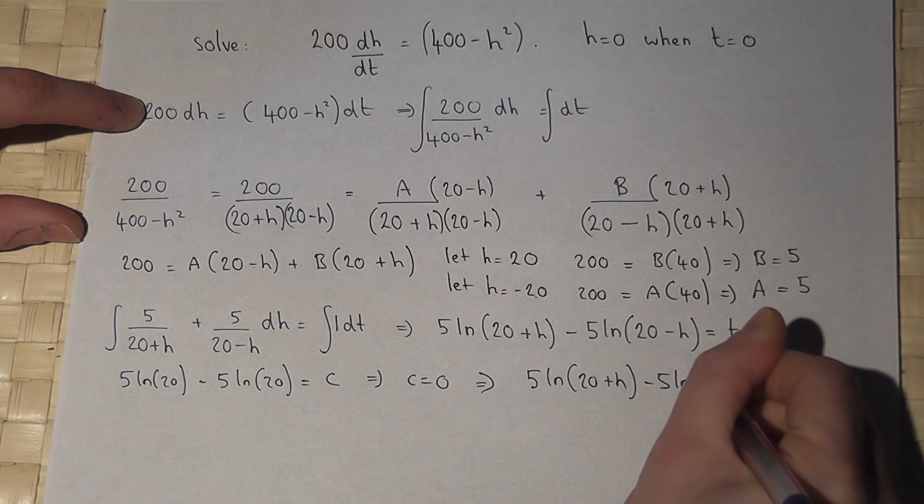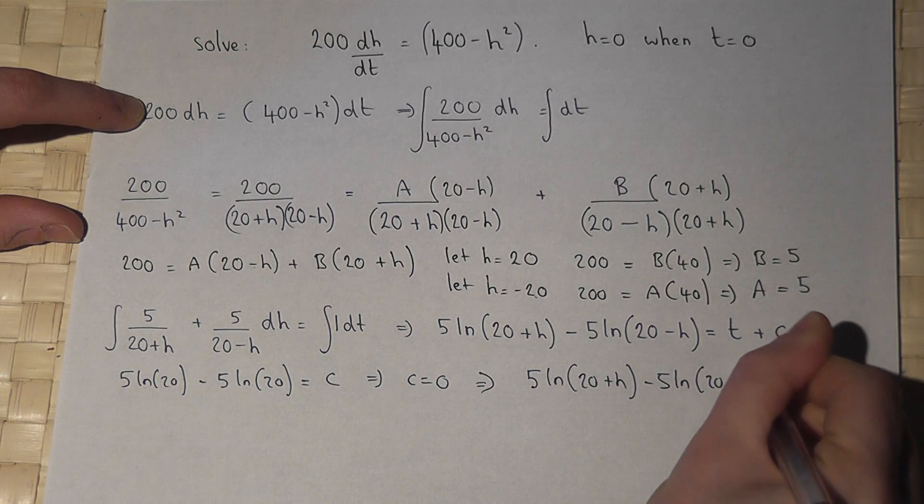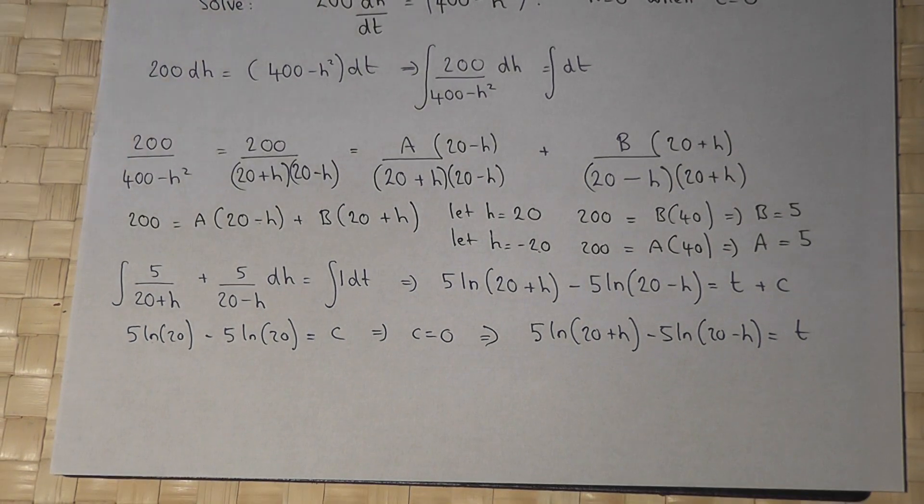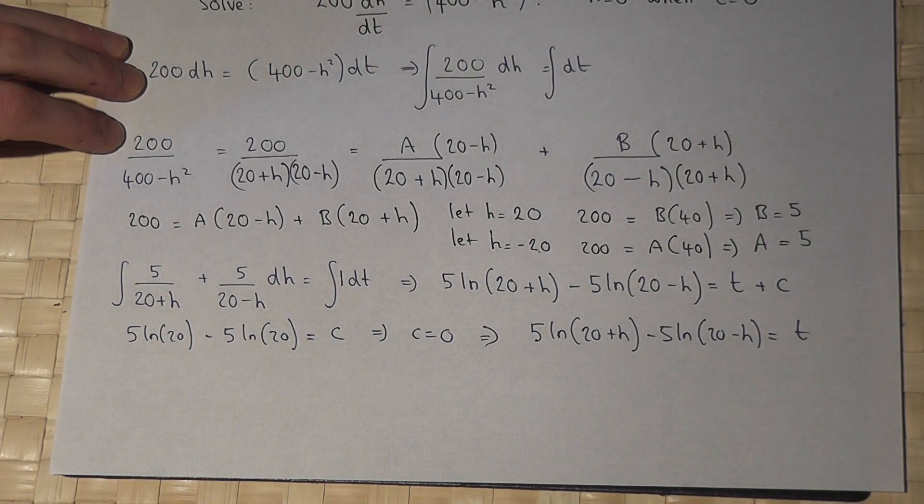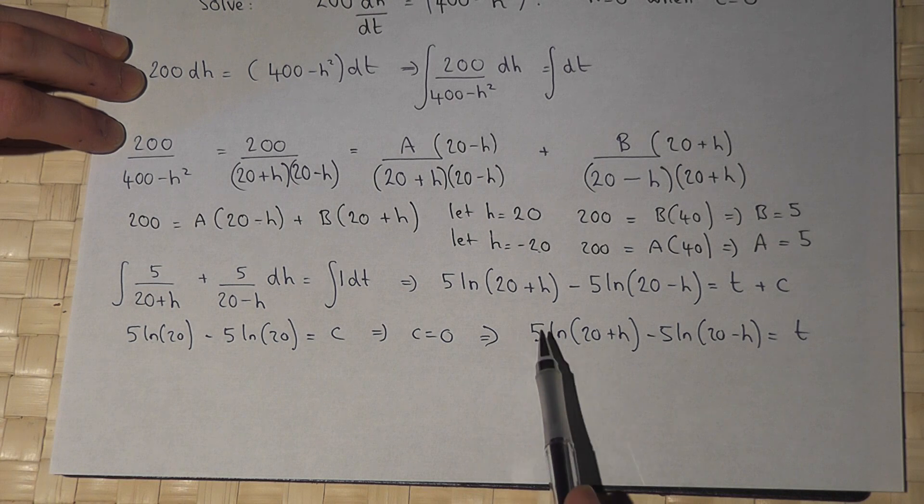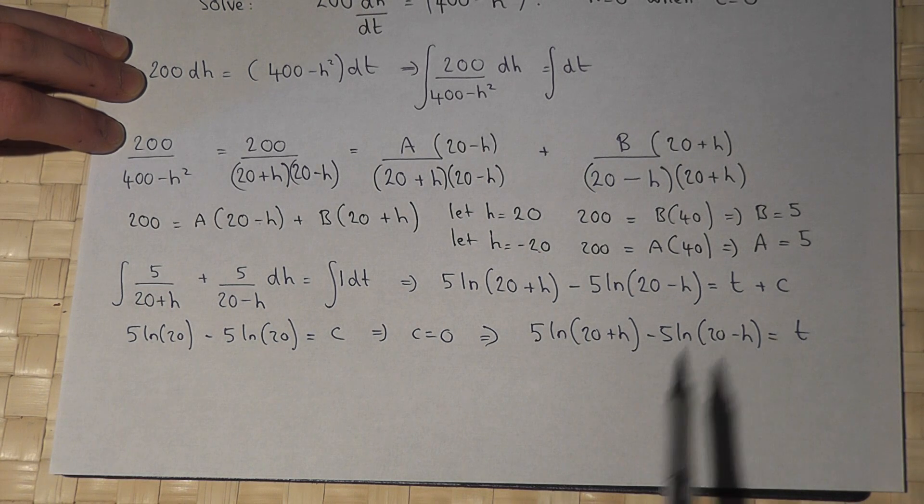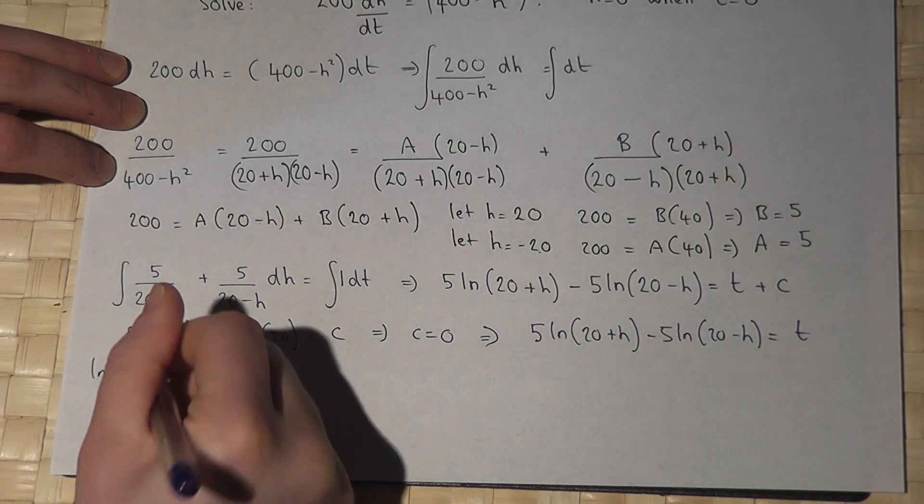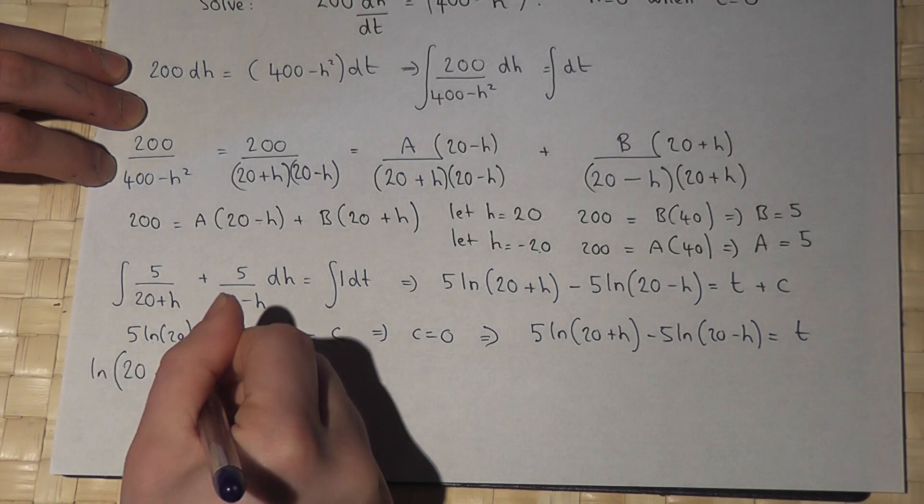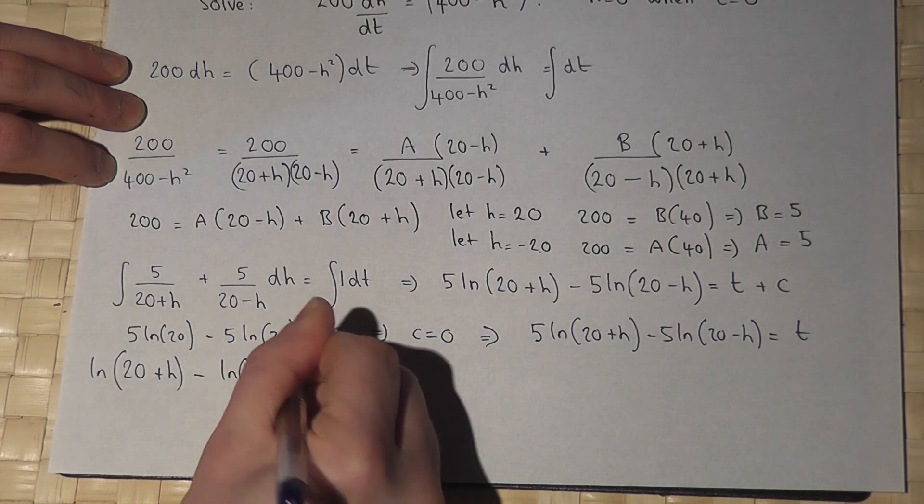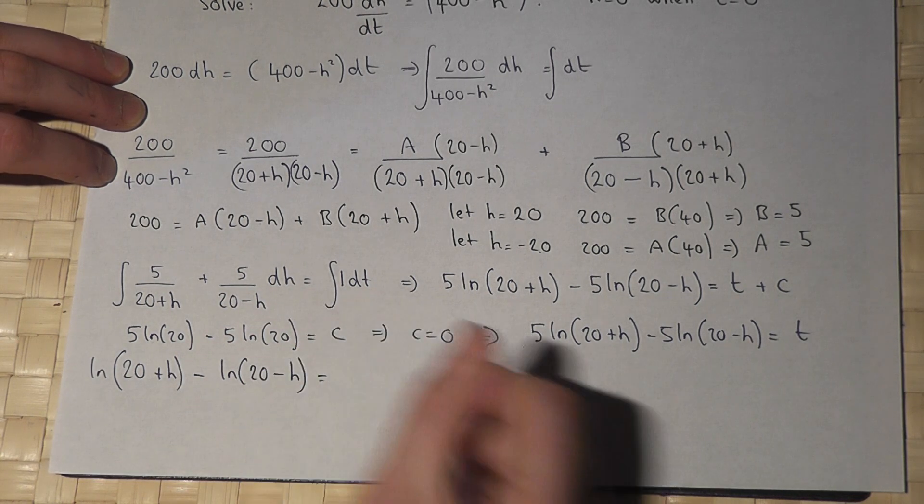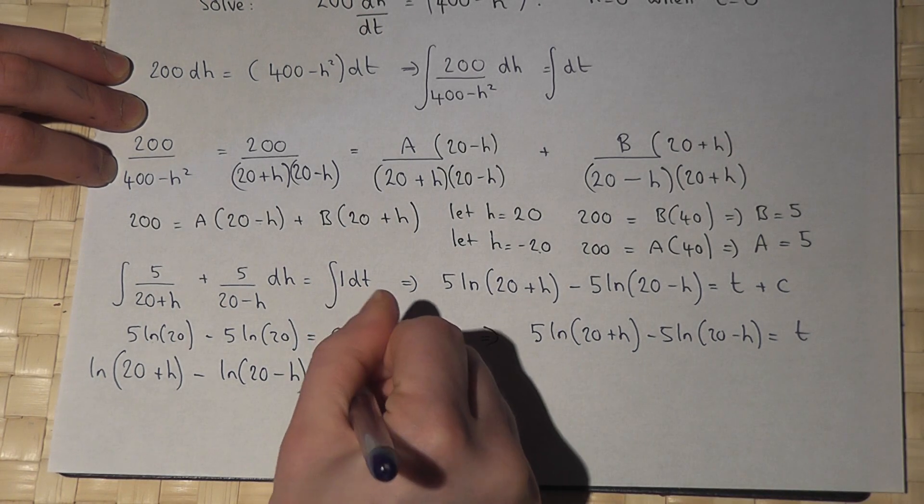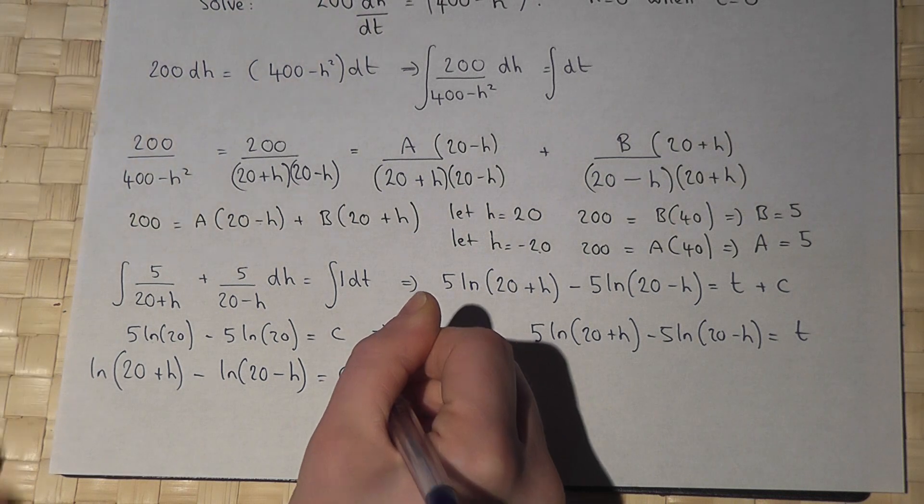We're almost there now. I will divide the whole thing by 5. So I get ln of 20 plus h minus ln of 20 minus h equals t over 5, which is 0.2t.